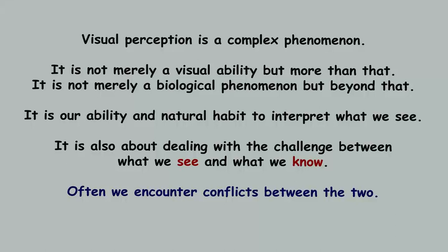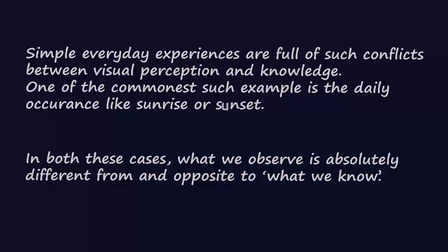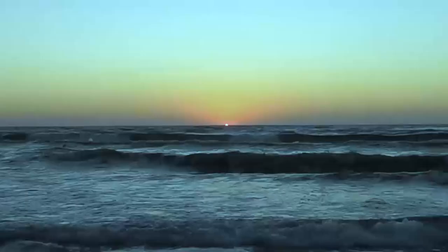Visual perception is also about dealing with the challenge between what we see and what we know, since there can often be a conflict between the two. Simple everyday experiences are full of such conflicts. One of the commonest examples is a daily occurrence like a sunrise or a sunset — in both these cases what we observe is absolutely different from and opposite to what we know.